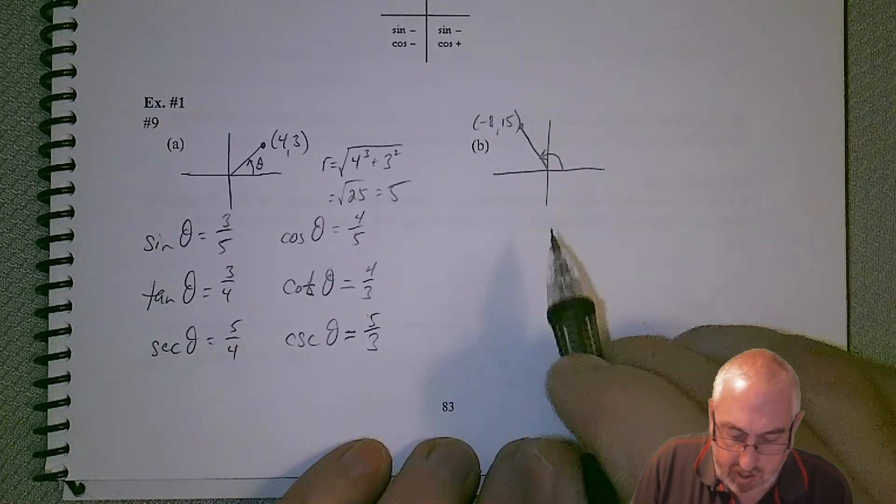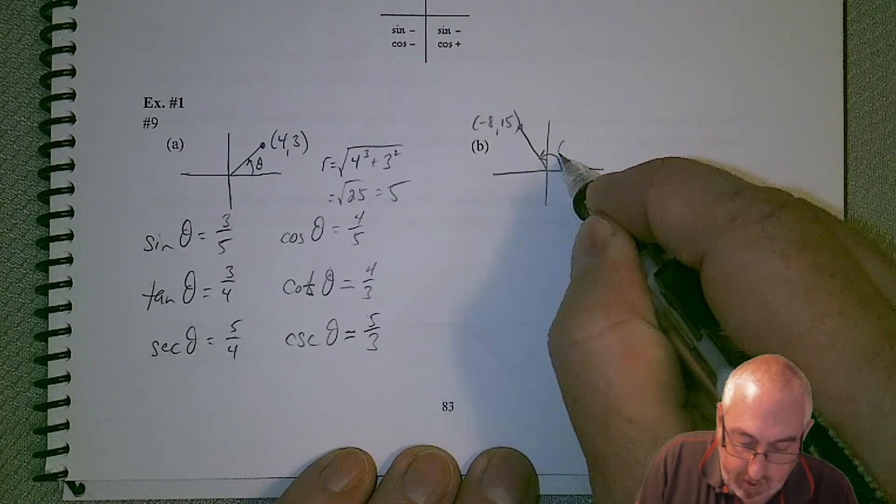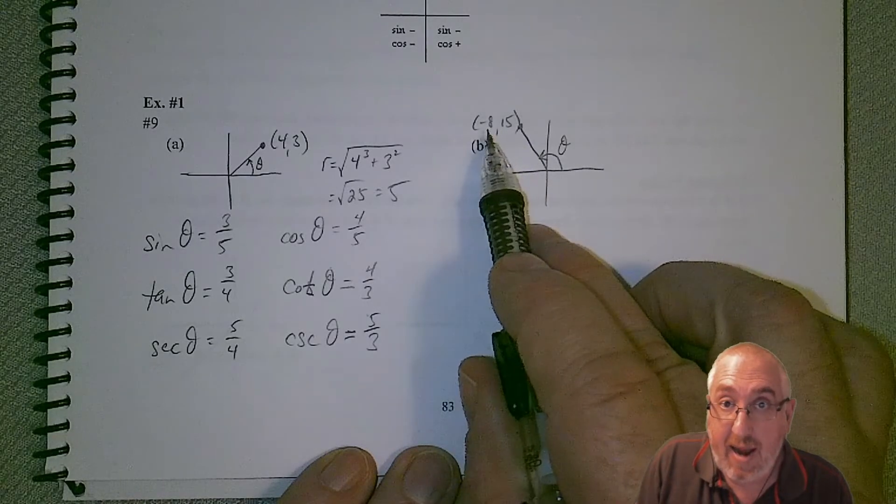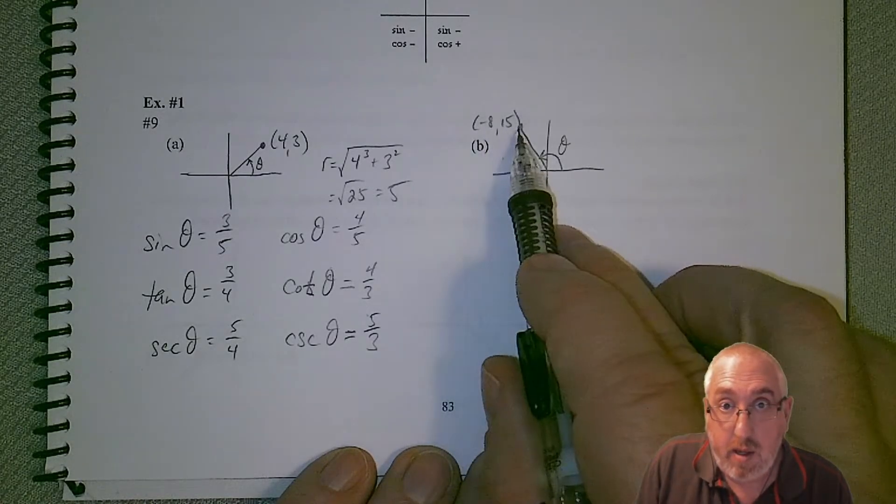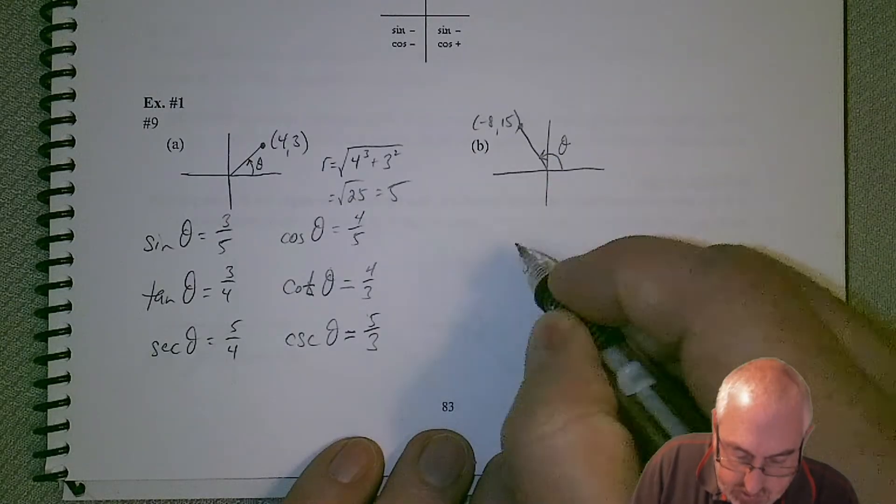We have an angle now in the second quadrant, so this is our angle theta. It's in the second quadrant, and so we can see that the x value better be negative and the y value is positive. So that is going to affect our answers a little bit.